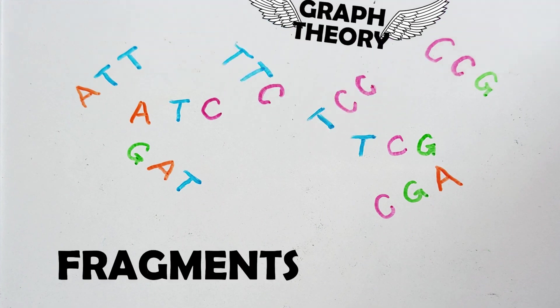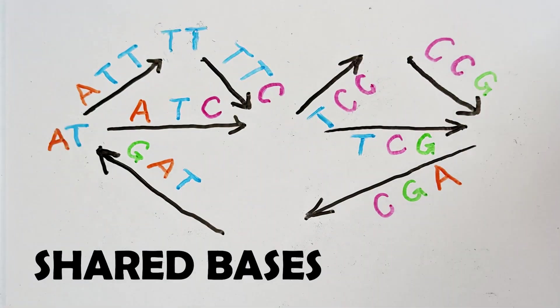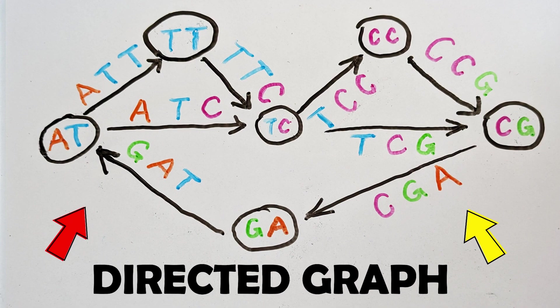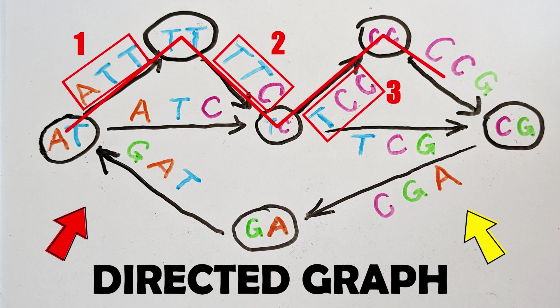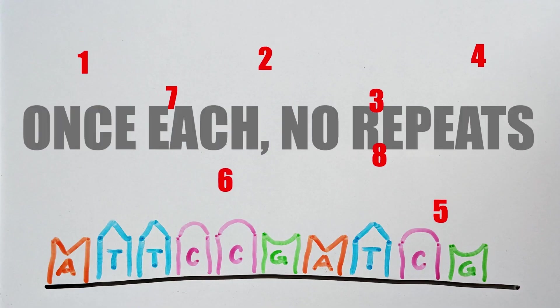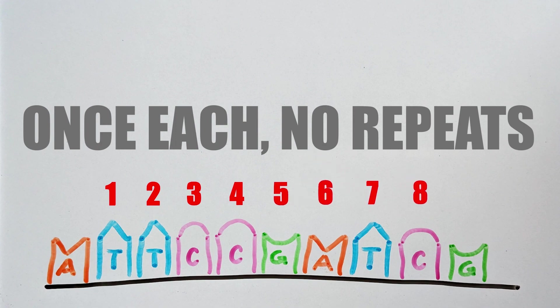Enter graph theory. DNA fragments are edges in a graph, and shared bases between fragments are nodes. Now structured as a directed graph, an Eulerian path can show us how to sequence the fragments, each one visited once with no repeats.